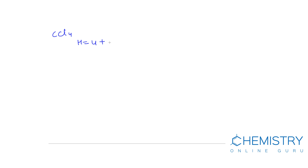Another example is CCl₄. Carbon forms 4 sigma bonds with the Cl atoms, and no lone pair of electrons is present on the carbon atom. So H equals 4 plus 0, which equals 4. When H equals 4, hybridization is sp3. Therefore, CCl₄ has sp3 hybridization.